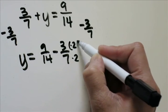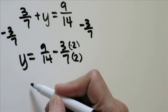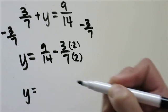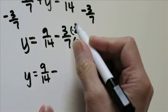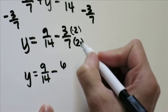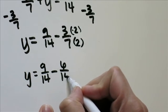We'll multiply the 3 sevenths by 2 over 2, which will give us y equals 9 fourteenths minus 3 times 2, which is 6. 7 times 2, which is 14.